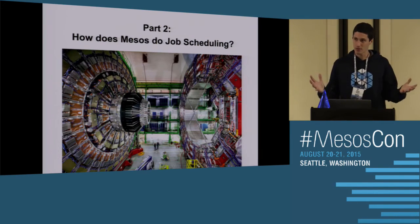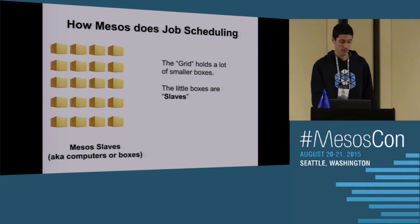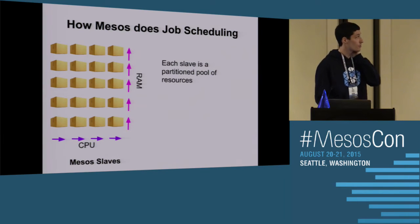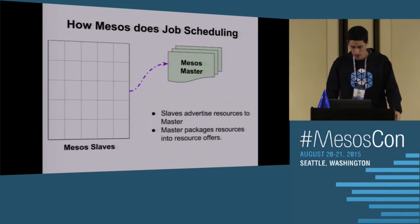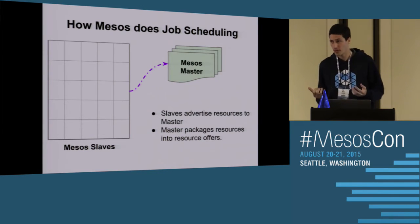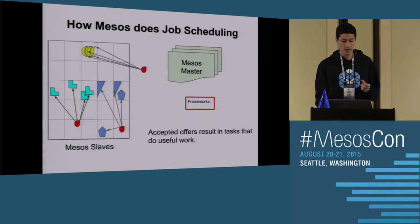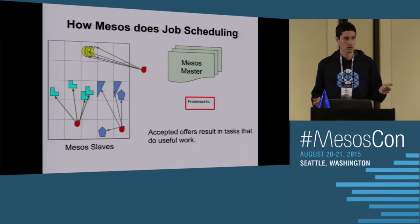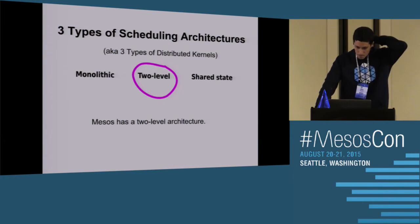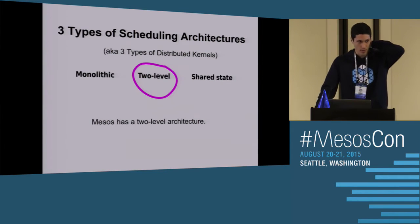How does Mesos do job scheduling? Mesos is a big box — call it the grid — and the little boxes are slaves. Each slave is a partitioned pool of resources. Slaves advertise the size of their box to the Mesos master, saying how many resources they have available. The master packages those into offers and gives those offers to frameworks. Frameworks accept or reject the offers, and accepted offers result in tasks that do useful work.